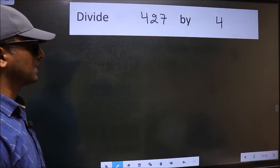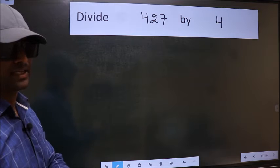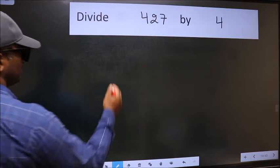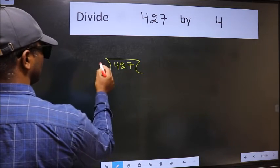Divide 427 by 4. To do this division we should frame it in this way: 427 and 4 here.